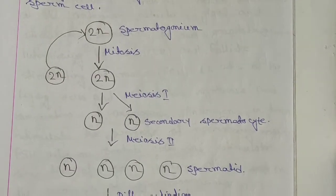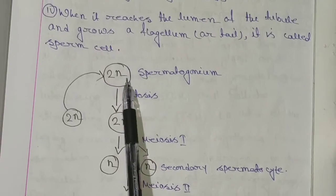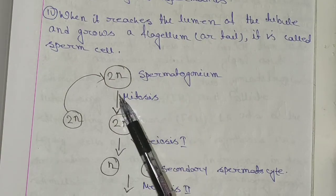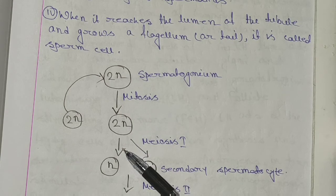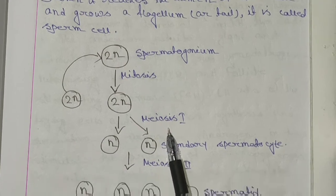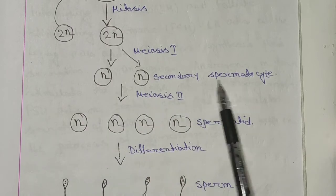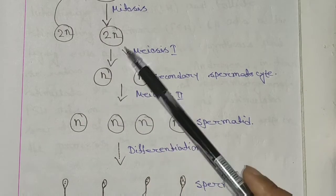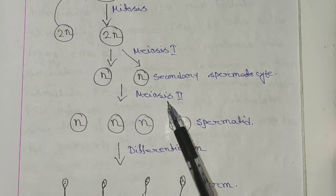Here is a diagrammatic representation of spermatogenesis. This is 2N — the spermatogonium cells. These 2N diploid spermatogonium cells divide through mitosis. After division we get 2N cells, which then divide through meiosis. After division, two secondary spermatocytes are produced, and ultimately four sperm cells are formed.